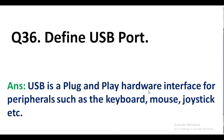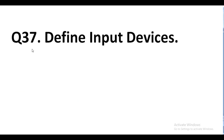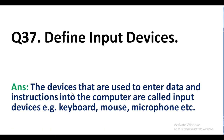Question number 35. Define USB. Answer. USB is a plug-and-play hardware interface for peripherals such as the keyboard, mouse, joystick, etc. Question number 37. Define input devices. Answer. The devices that are used to enter data and instructions into the computer are called input devices. Examples: keyboard, mouse, microphone, etc.